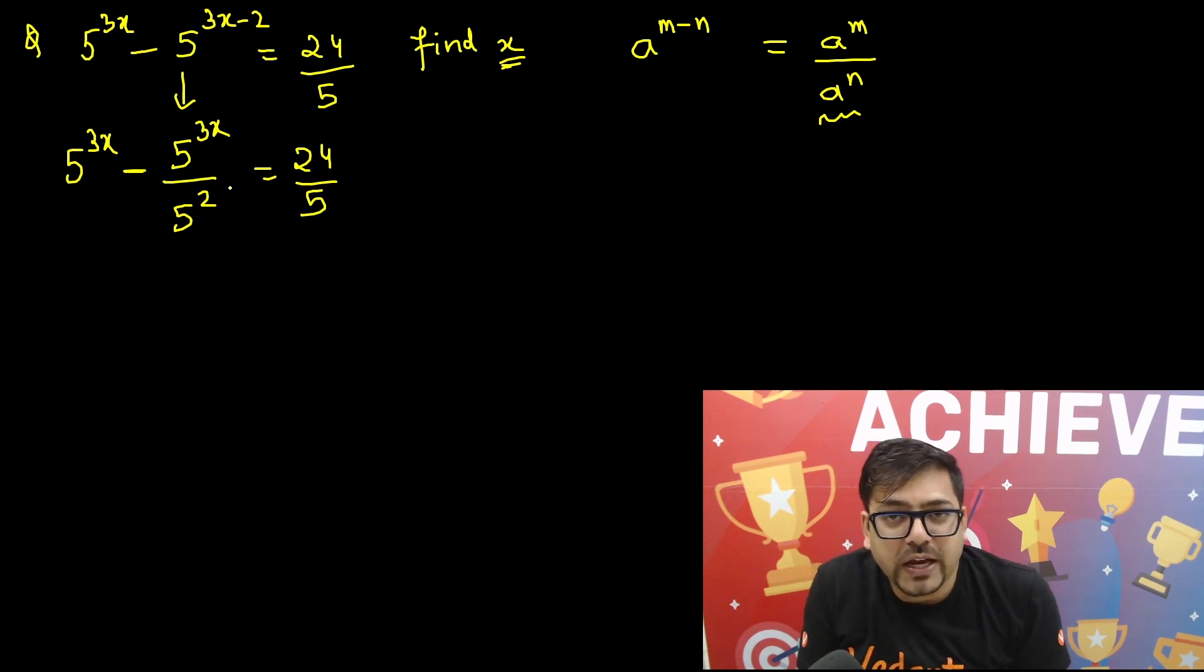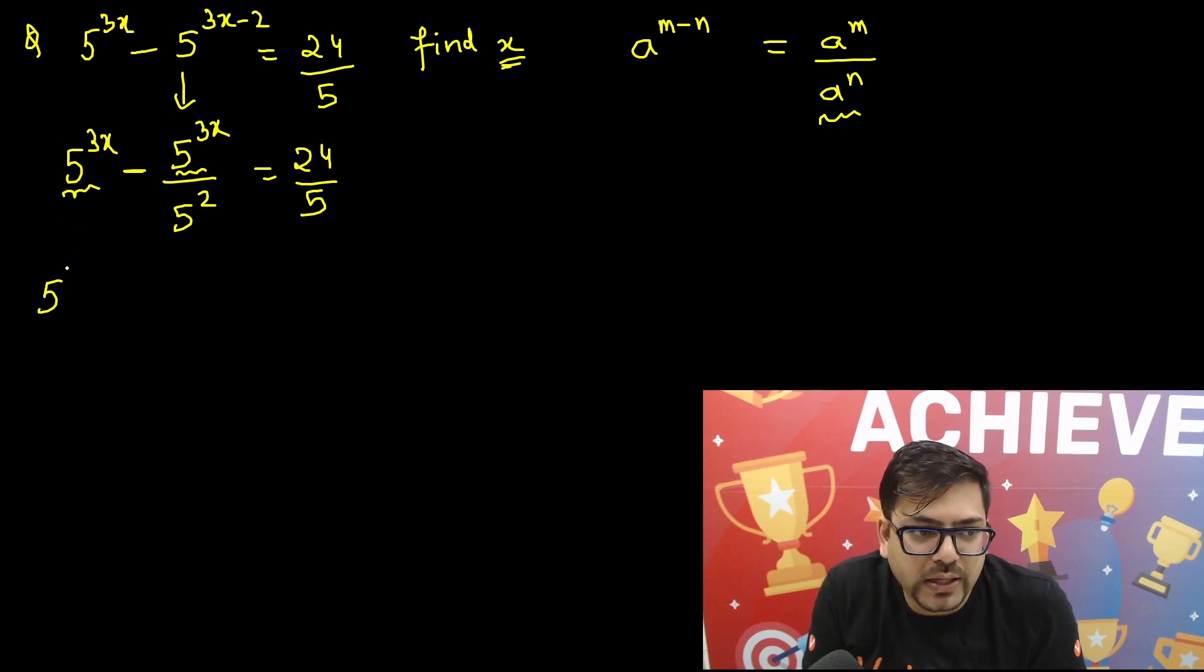Now from this, we are able to see that 5 raised to power 3x and 5 raised to power 3x both have the same term, so we can take it common. So I'll take 5 raised to power 3x as common. In bracket, we are having 1 minus, here we have taken the number, so 1 is remaining and divided by 5 raised to power 2, that is 25, and that equals 24 by 5.